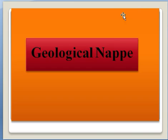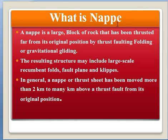Hello guys, so today I would like to talk about geological nappe. In this video I will cover what is a geological nappe and how it forms. A nappe is a large block of rock that has been transported far from its original position by thrusting, thrust faulting, folding, or gravitational gliding. The resulting structures may include large-scale recumbent folds, fault plane, and klippe.